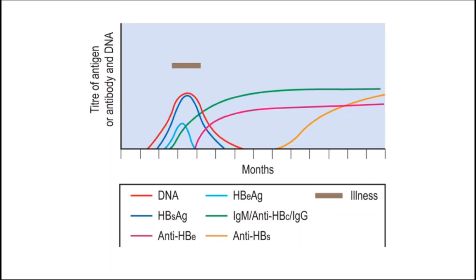HBV DNA indicates active replication of the virus and is more accurate than the hepatitis B E antigen, especially in cases of escape mutants. It is used mainly for monitoring response to therapy.